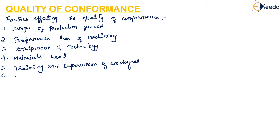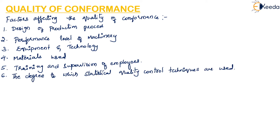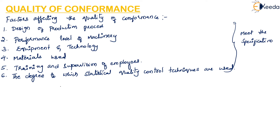The last factor is the degree to which statistical control techniques are used. All these factors — design of production process, performance level of machinery, equipment and technology, materials used, training and supervision of employees, and use of statistical control techniques — must all be within the specifications. If they fail to meet the specification, then we cannot achieve quality of conformance.